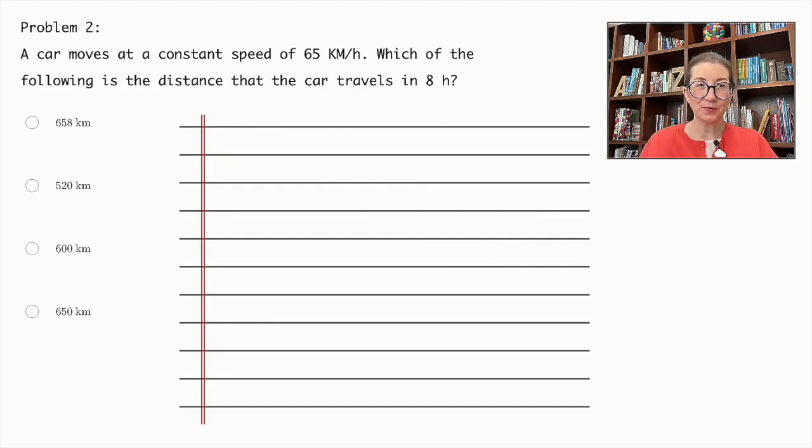Problem number two. A car moves at a constant speed of 65 km per hour. Which of the following is the distance that the car travels in 8 hours. 658 km, 520 km, 600 km, or 650 km.